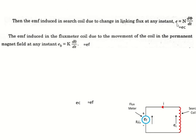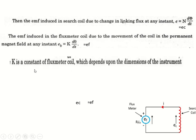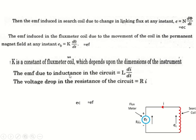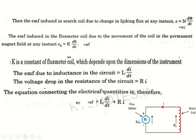The EMF due to inductance of the circuit is L × di/dt, and the voltage drop in the resistance is i × R. The equation connecting all electrical quantities can be written as: Ec = Ef + L × di/dt + i × R. This is the complete equation for the EMF induced in the circuit.